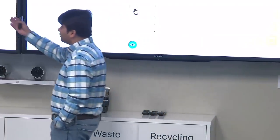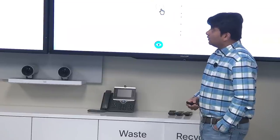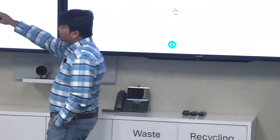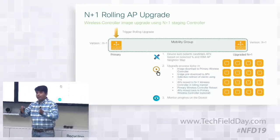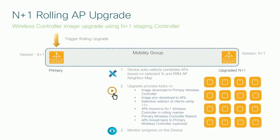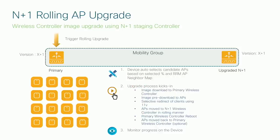If you define 15% of APs to upgrade and have 100 APs, those 15 APs must successfully upgrade before the next batch starts. The system gives two or three extra retry attempts. When APs are upgraded, a mobility ACK message is sent back to the primary controller confirming they are ready to serve clients, and then the remaining 15% starts moving. Once all APs are upgraded, the previous primary controller is upgraded to X+1, and both controllers run the same version. APs can stay on the secondary or move back to primary using the same RF intelligence with no downtime.